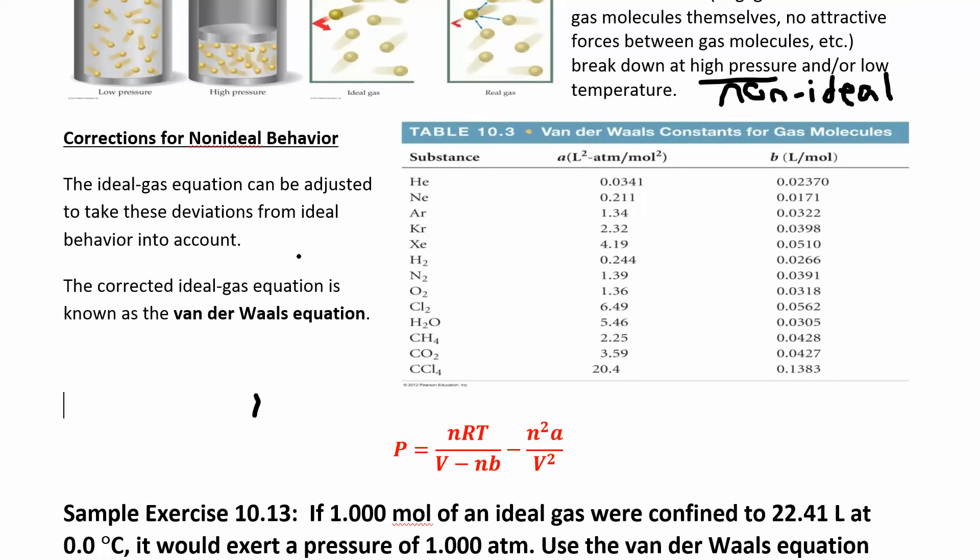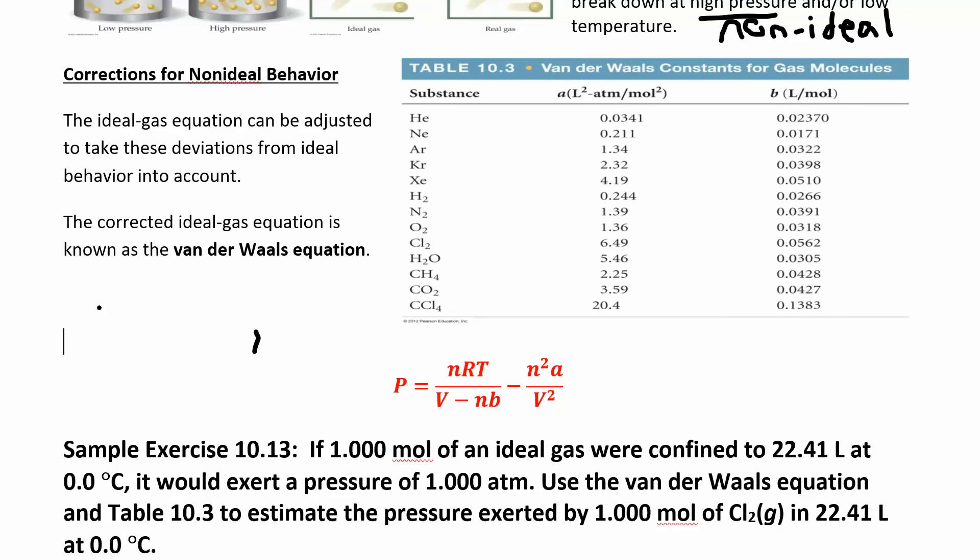You can correct the ideal gas law. Remember what the ideal gas law looks like? PV equals NRT or P equals NRT over V. To correct for non-ideal behavior, you can add this little term.